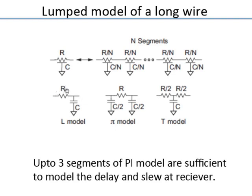For example, if a segment has resistance R and capacitance C, it can be modeled as an L-type model, a pi model (splitting C into two halves on either side), or a T model. Both pi and T are reasonably accurate for a small number of segments. Typically a pi model with 3 to 5 segments is good enough; more segments give more accuracy but longer simulation time.